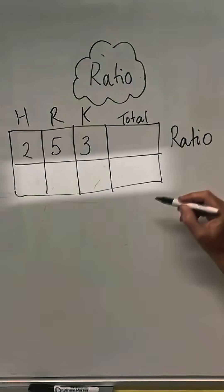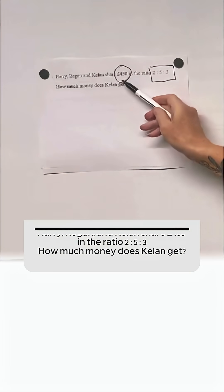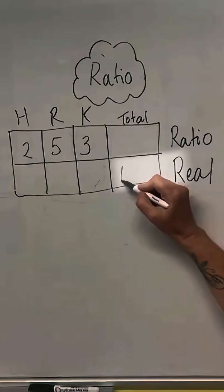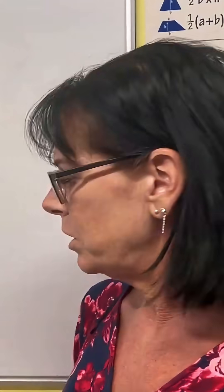So this top line was the ratio line and this bottom line is the real life line, so the 450 is the total in real life, so I'm going to put that there. So I've got everything I need from my question.